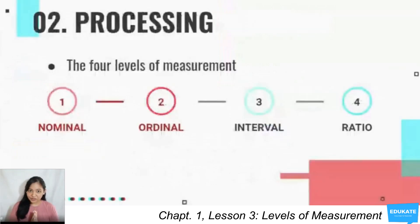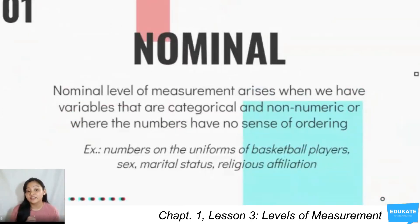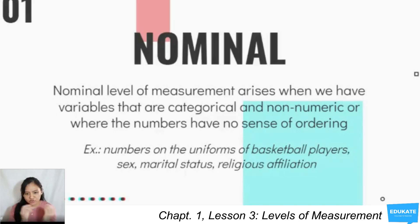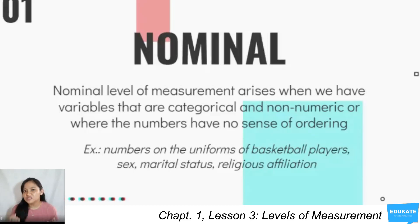For processing, to verify validity, we consider the four levels of measurement: nominal, ordinal, interval, and ratio. For nominal, we have variables that are categorical and non-numeric, or where the numbers have no sense of ordering. Examples include numbers on the uniforms of basketball or volleyball players, sex, marital status, and religious affiliation. In our study, students who responded yes to having breakfast can be coded as one, while those who responded no can be coded as zero. These codes are simply used for numerical coding and cannot be used for ordering or any mathematical operation.